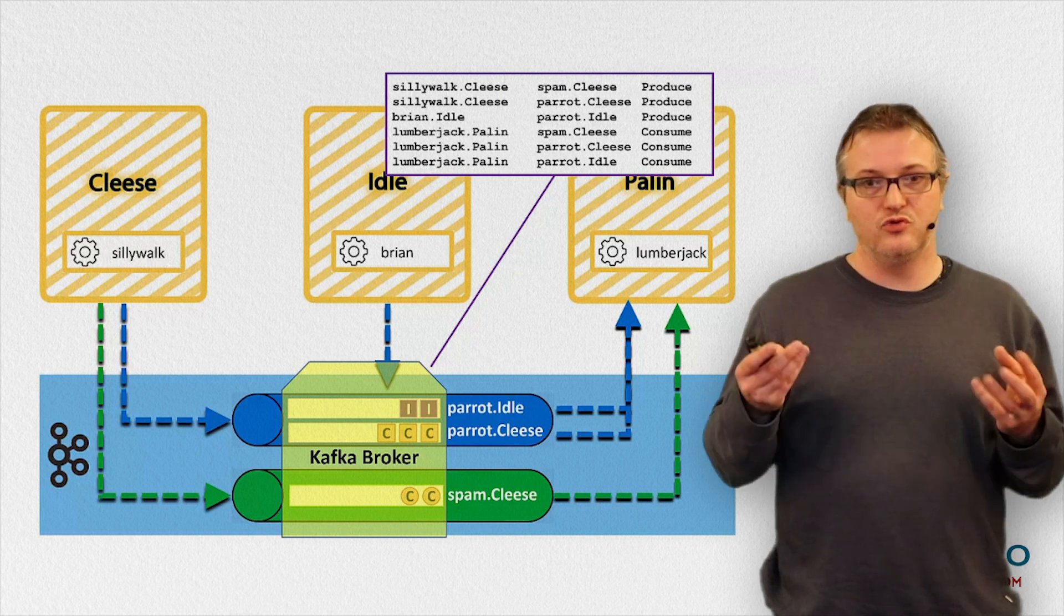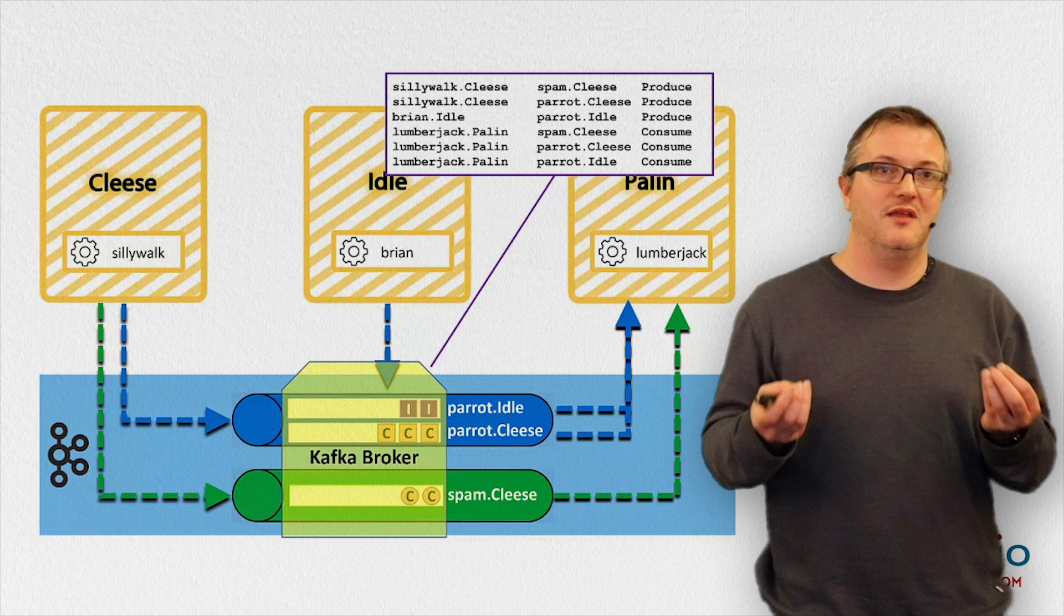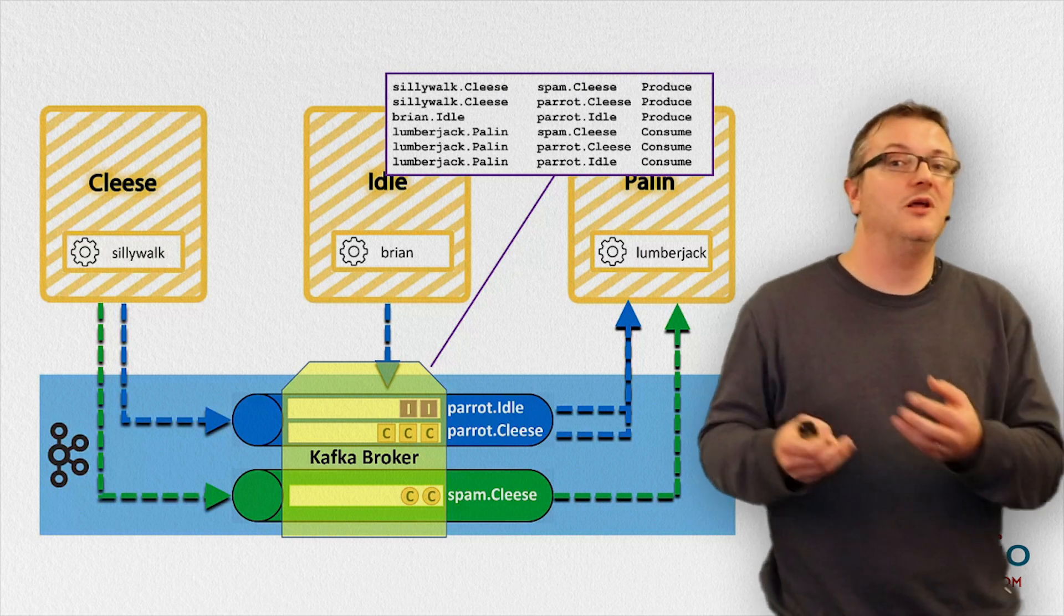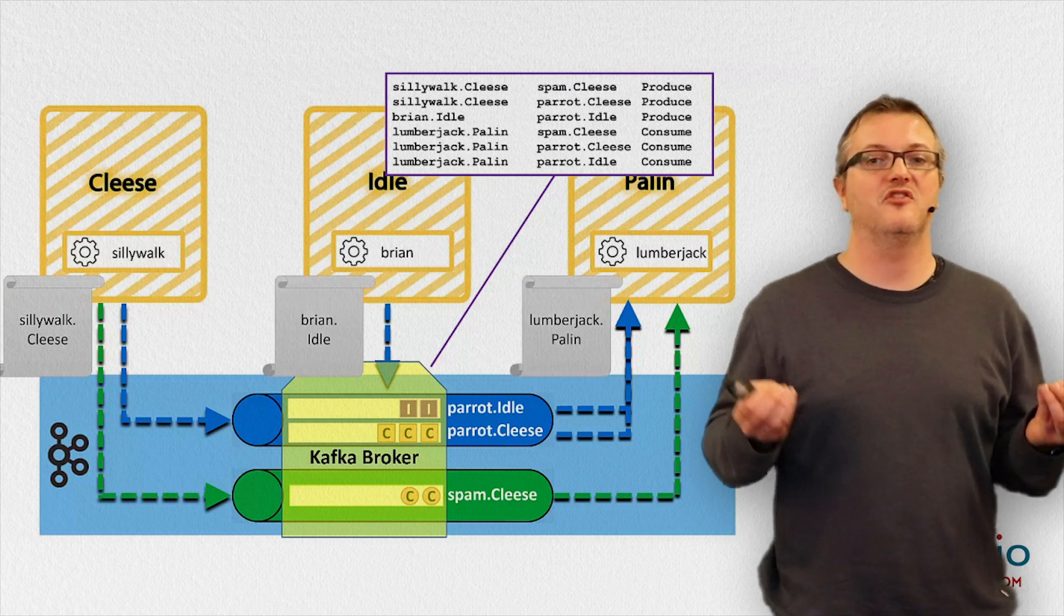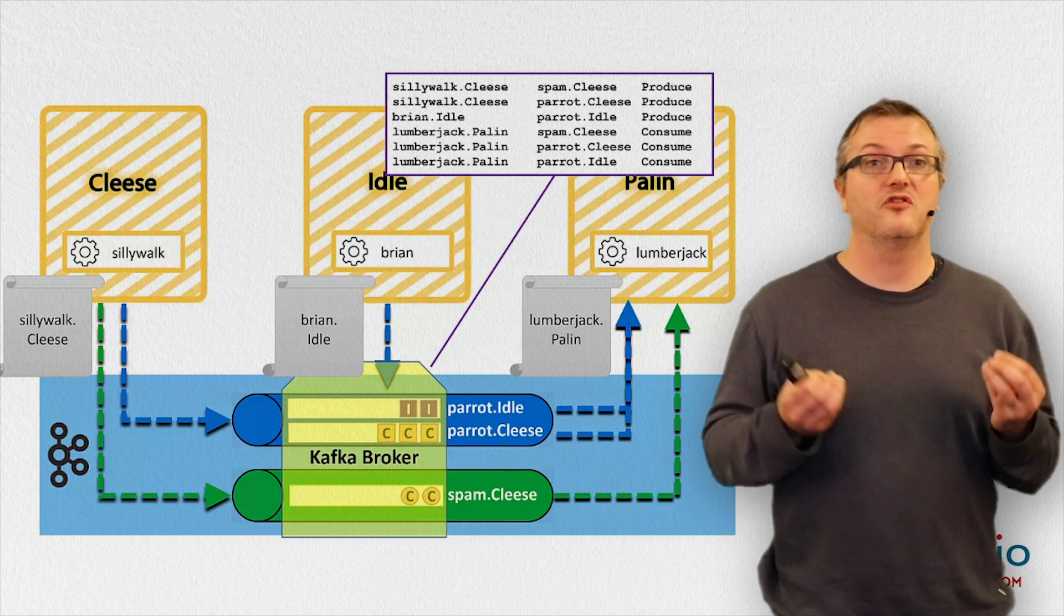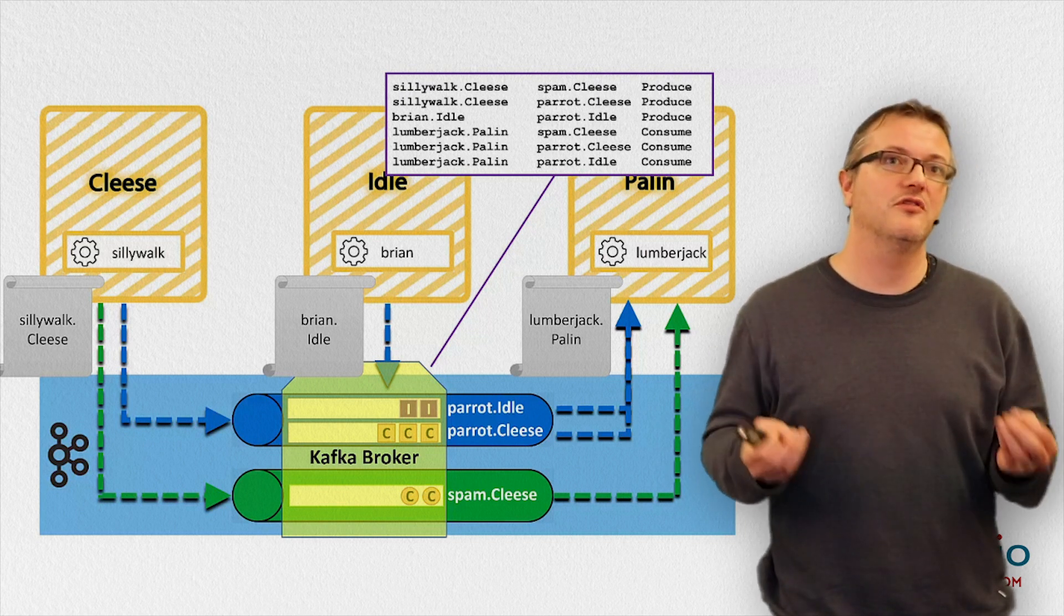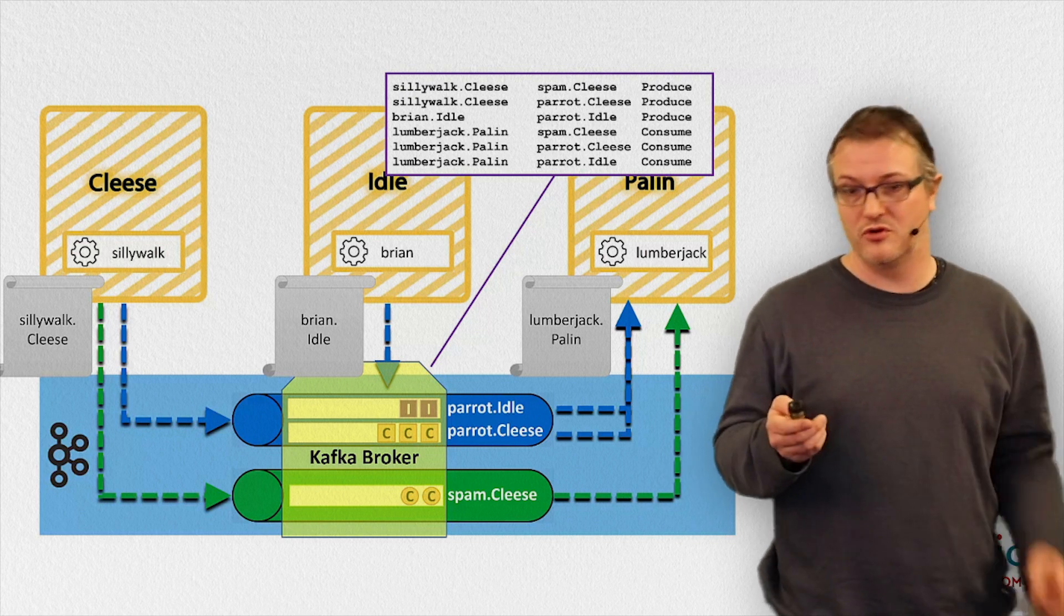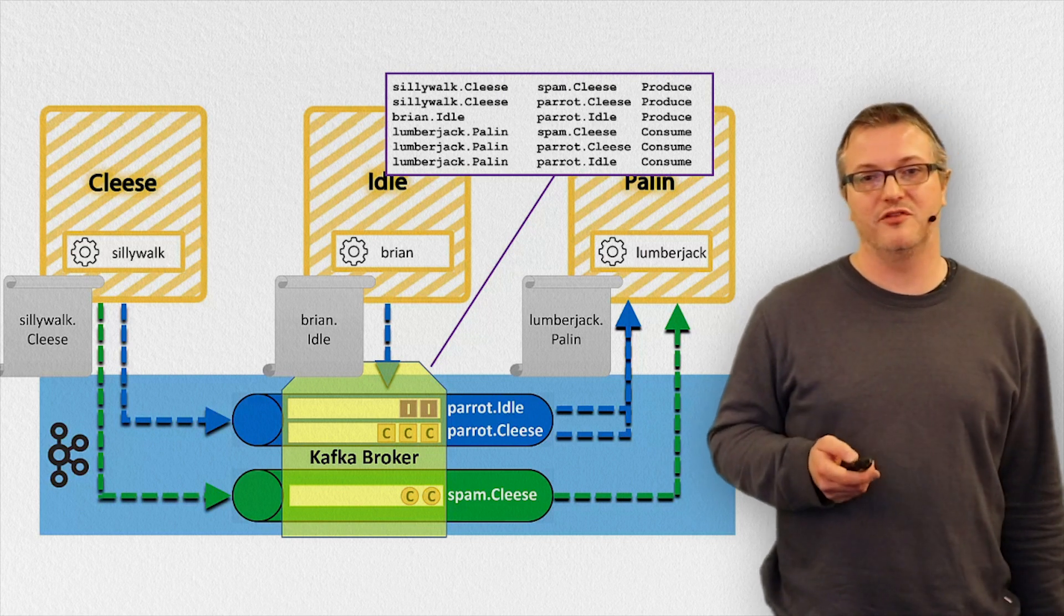So how do those containers then prove to the Kafka broker that they are indeed sillywalk.cleese or lumberjack.palin? Well, for that we chose to use the SSL based Kafka security mechanism. So those containers provide an SSL certificate upon connection to the Kafka broker. That leaves us with one question. How do they get those certificates?